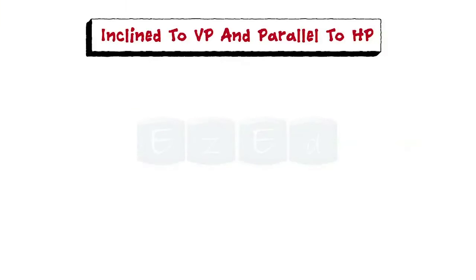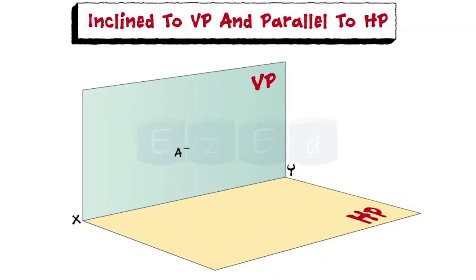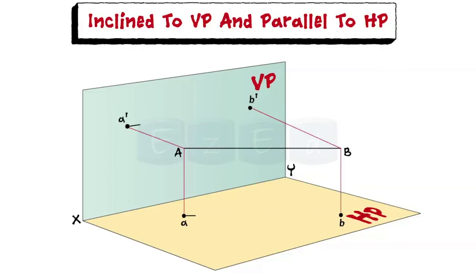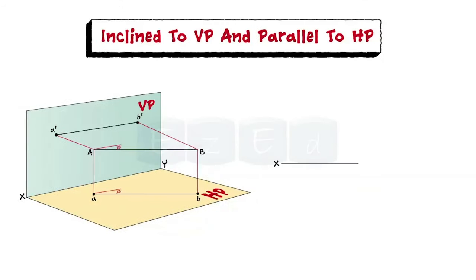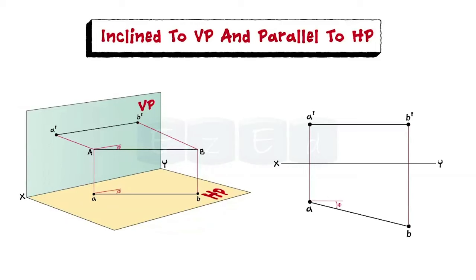Let us see a line which is inclined to VP and parallel to HP. For this case, line AB is inclined with respect to VP but it is parallel to HP, and its representation is as shown along with its orthographic pattern. In this case, the top view is inclined to line XY and shows the true length of AB, and the front view is parallel to line XY.